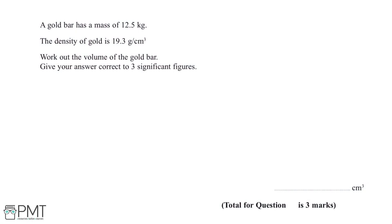A gold bar has a mass of 12.5 kilograms. The density of the gold is 19.3 grams per centimeter cubed. Work out the volume of the gold bar. Give your answer correct to three significant figures.